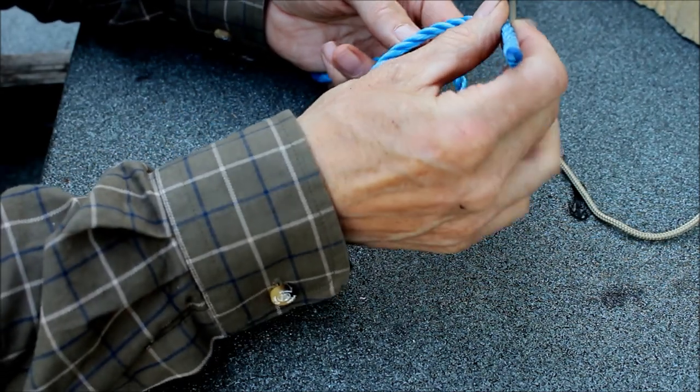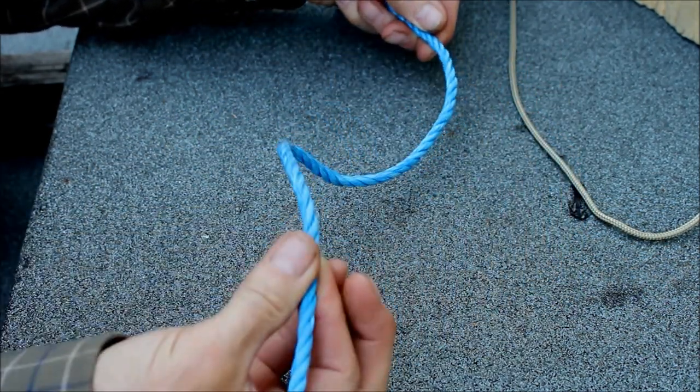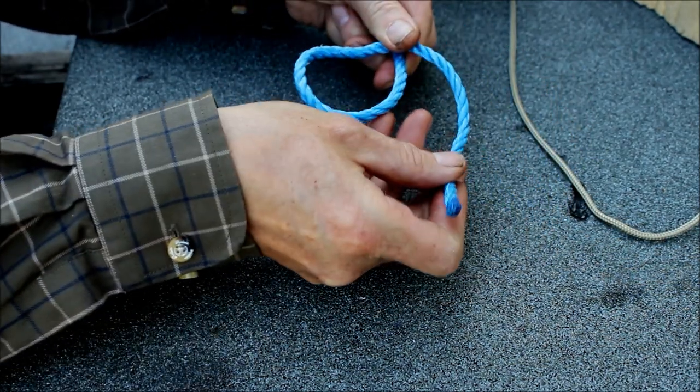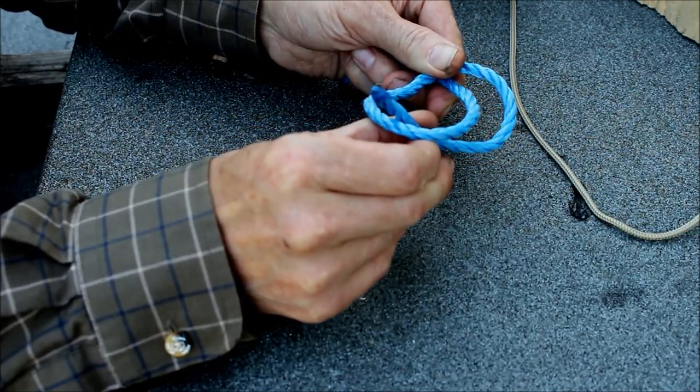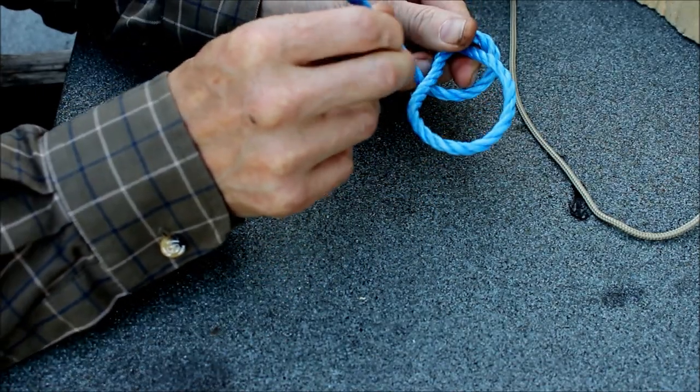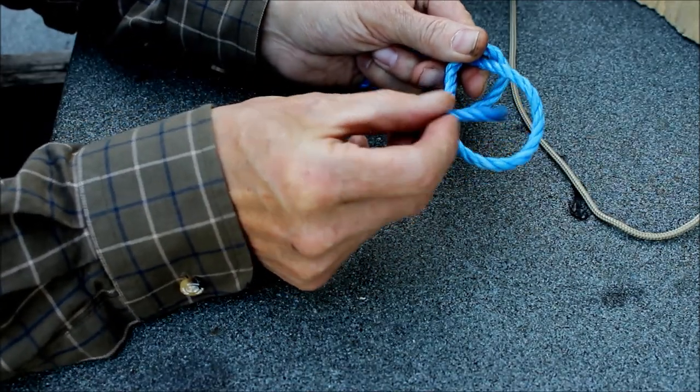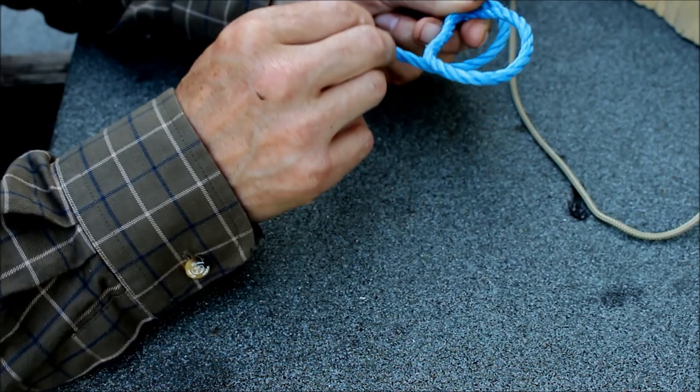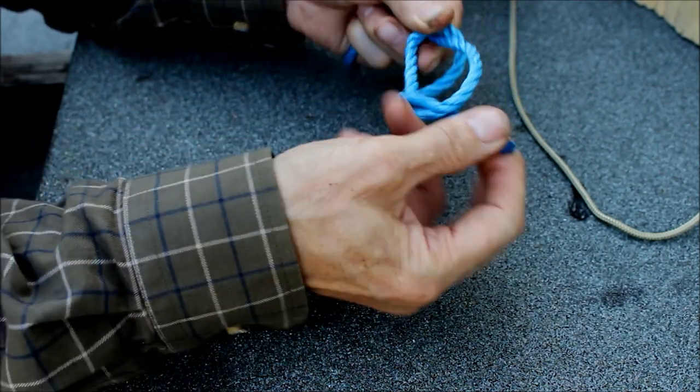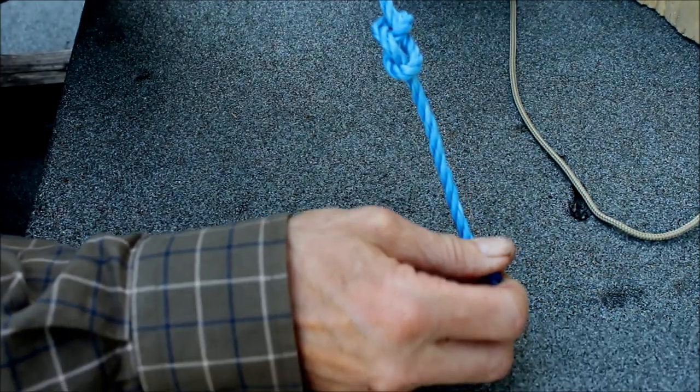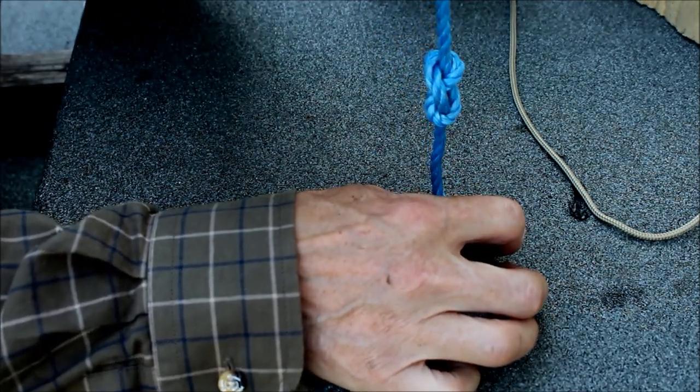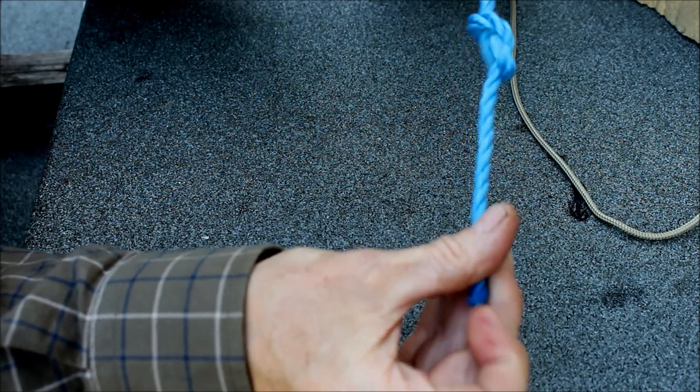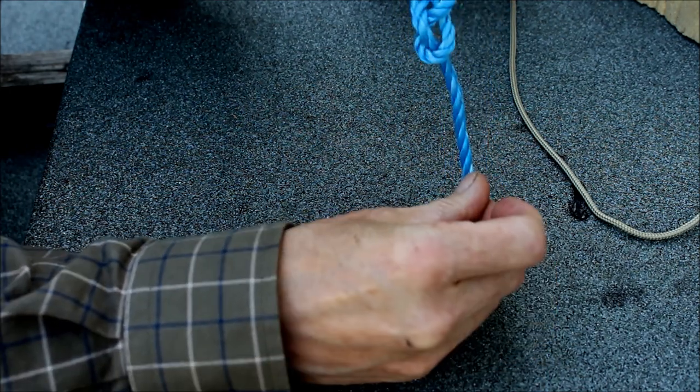If you know the overhand knot then you're pretty much there for the figure of eight. You just start as if you're going to tie an overhand knot. Form your loop, take your loose end, and instead of passing it up through the bottom of that loop, just carry on once more round, another half turn. Go half a turn more and go down through the top and form your figure of eight knot.